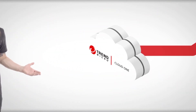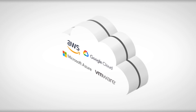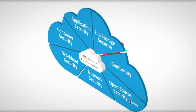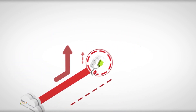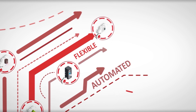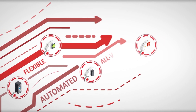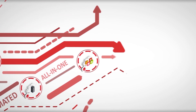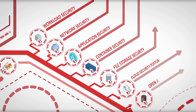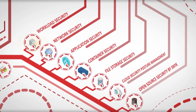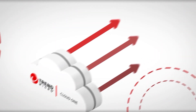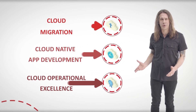Introducing Trend Micro Cloud One, the world's leading security services platform for organizations building in the cloud. Trend Micro delivers the broadest and deepest cloud security offering in one solution. Cloud One gives you the flexibility and speed to solve your challenges today and the innovation to evolve with your cloud services in the future. With a comprehensive set of services, Trend Micro Cloud One provides visibility and automatically secures all your different cloud services and applications within one streamlined platform.